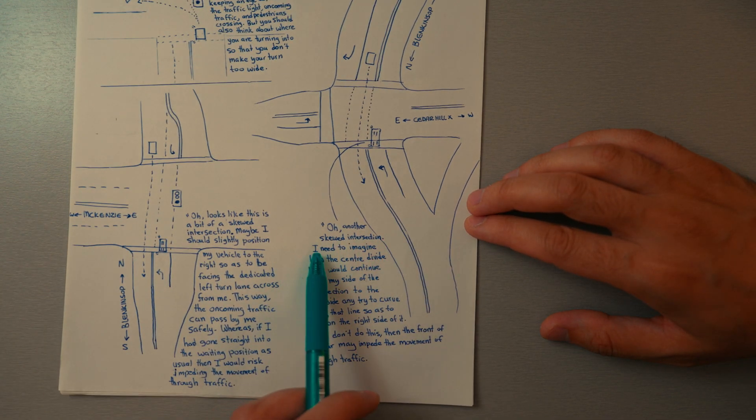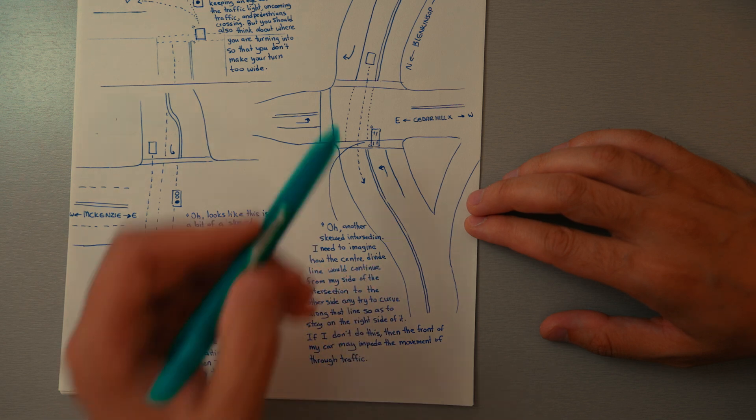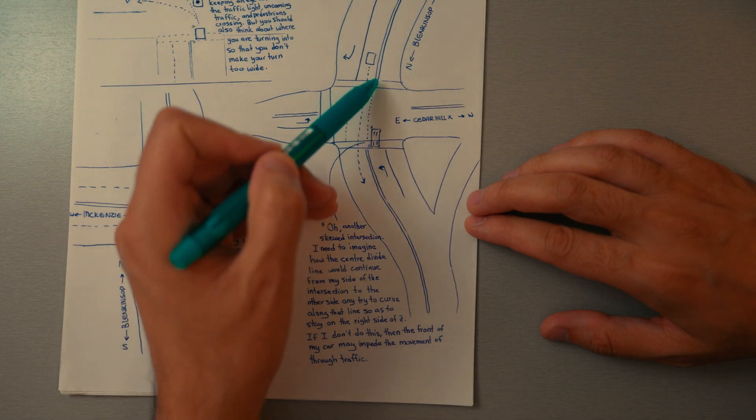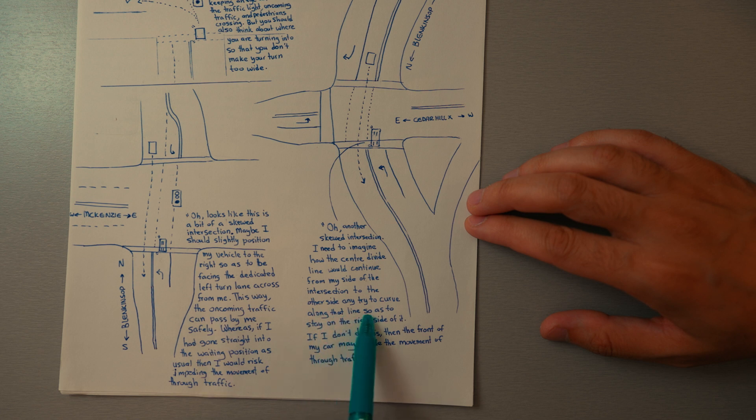So you should be thinking, 'Another skewed intersection. I need to imagine how the center divide line would continue from my side of the intersection to the other side.' Try to curve along that line to stay on the right side of it.